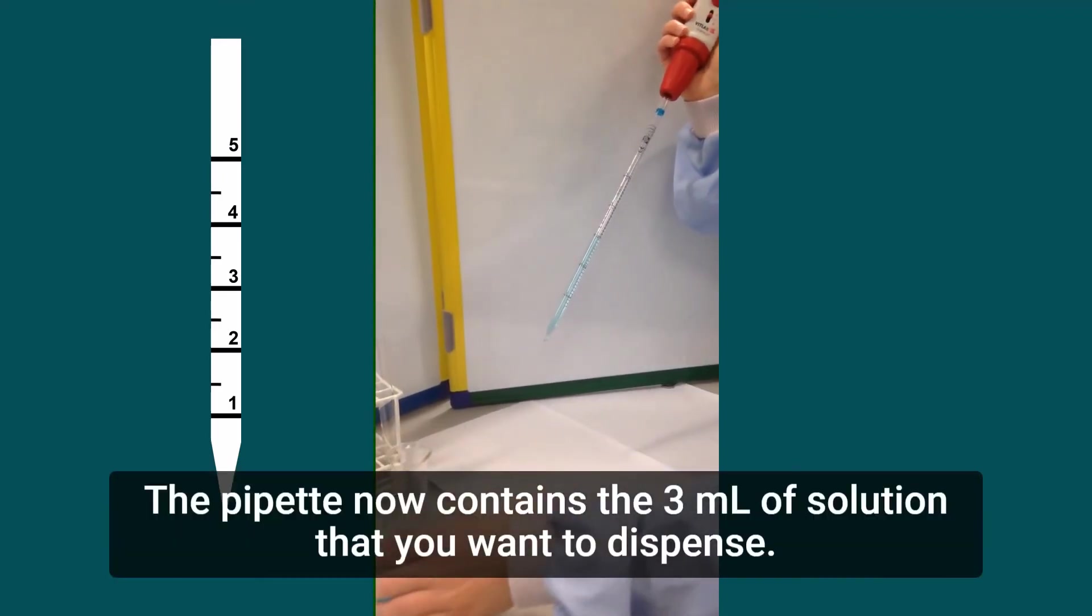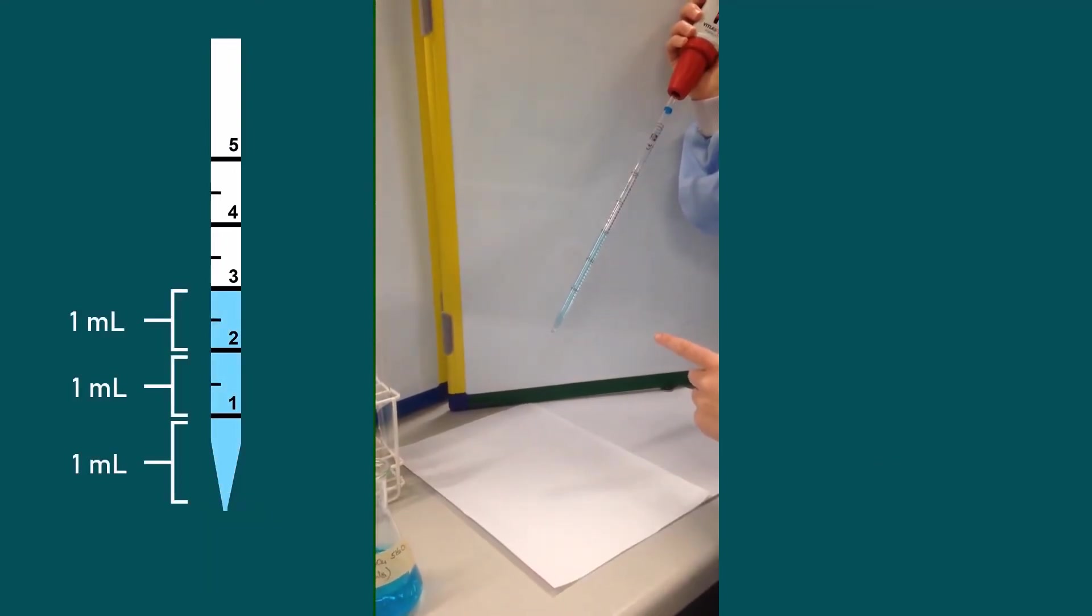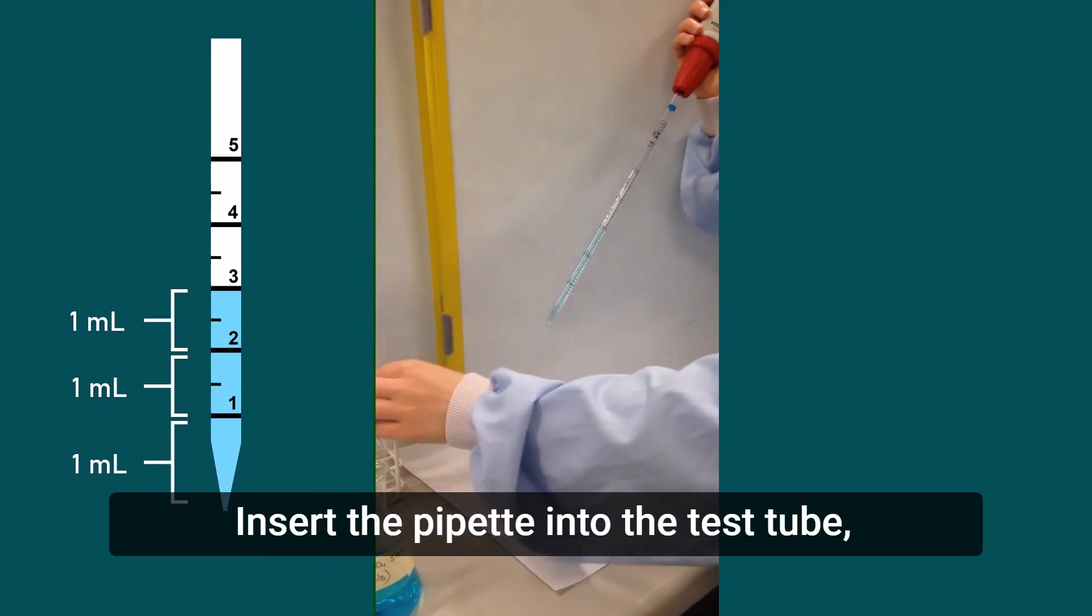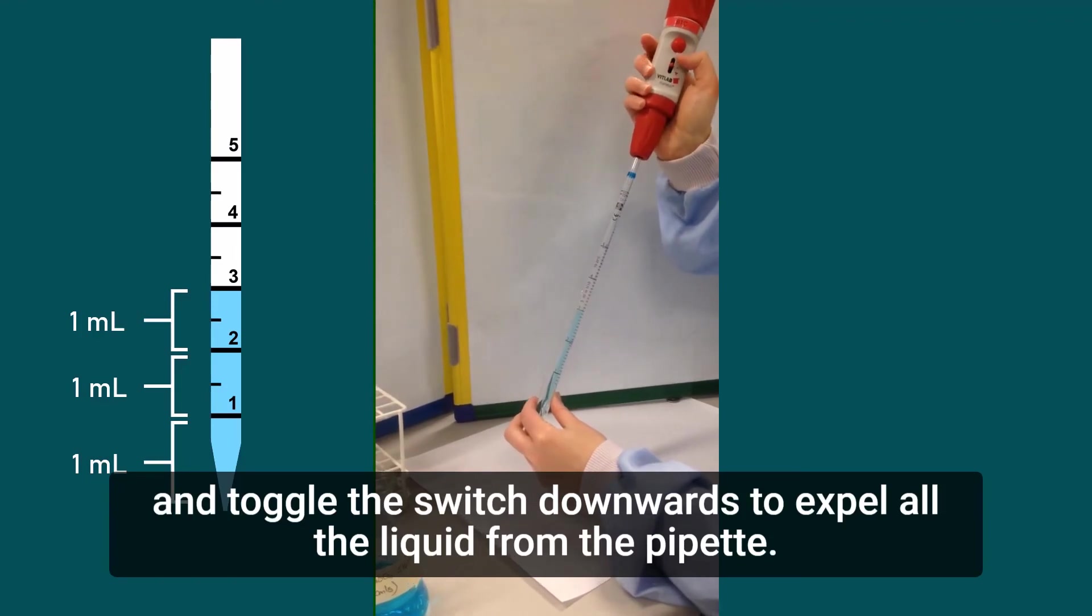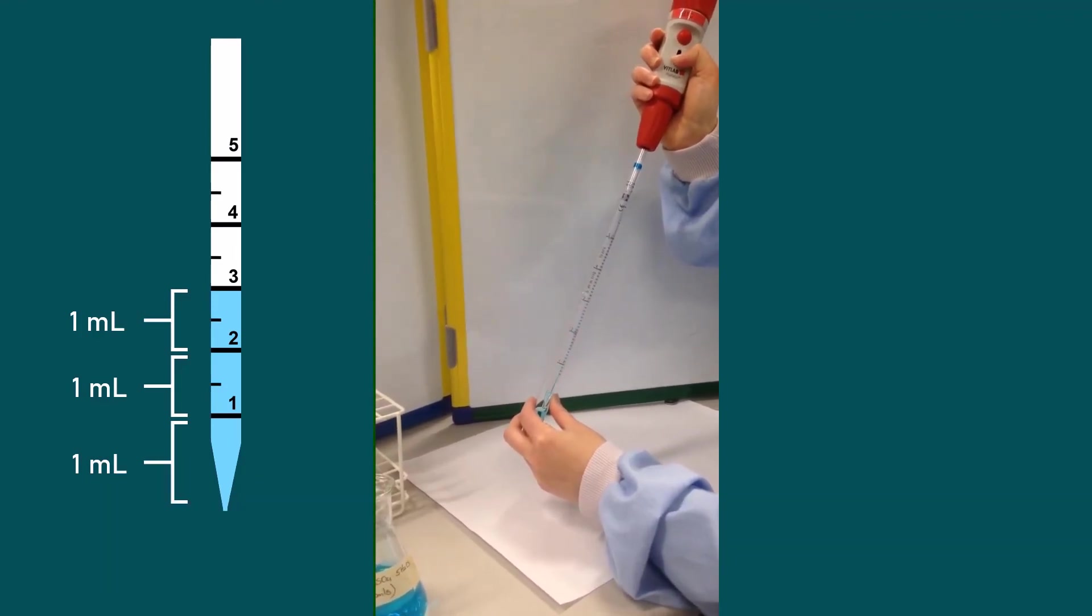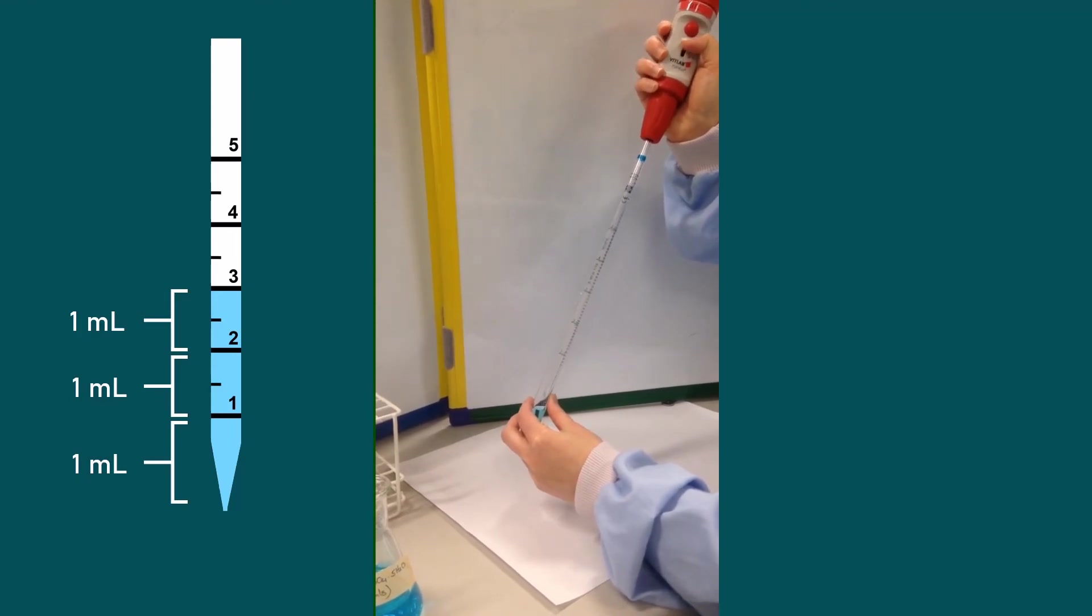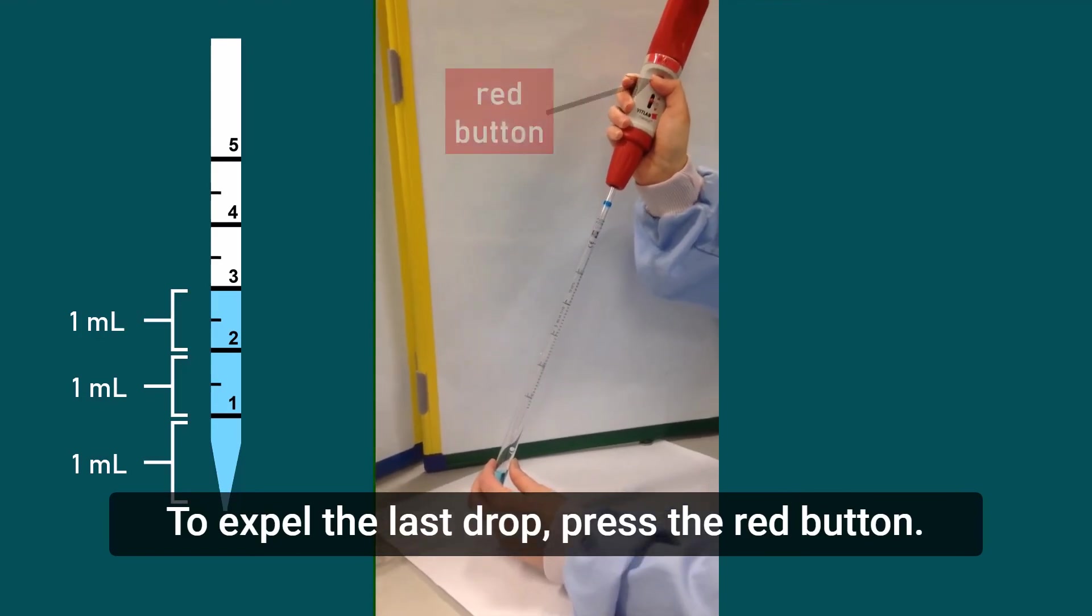The pipette now contains the 3ml of solution that you want to dispense. Insert the pipette into the test tube and toggle the switch downwards to expel all the liquid from the pipette. To expel the last drop press the red button.